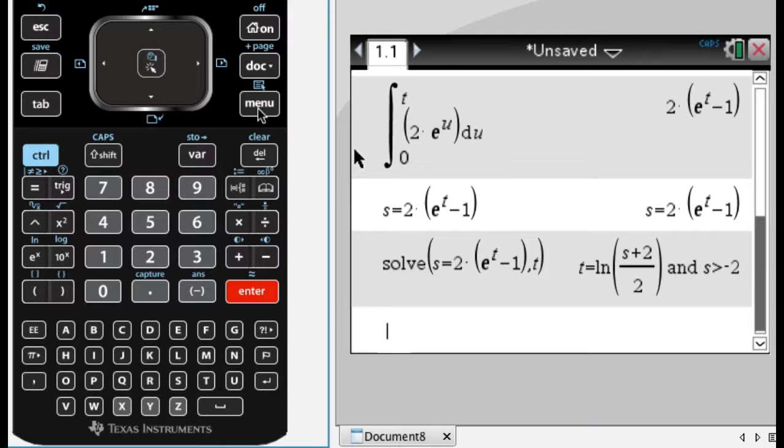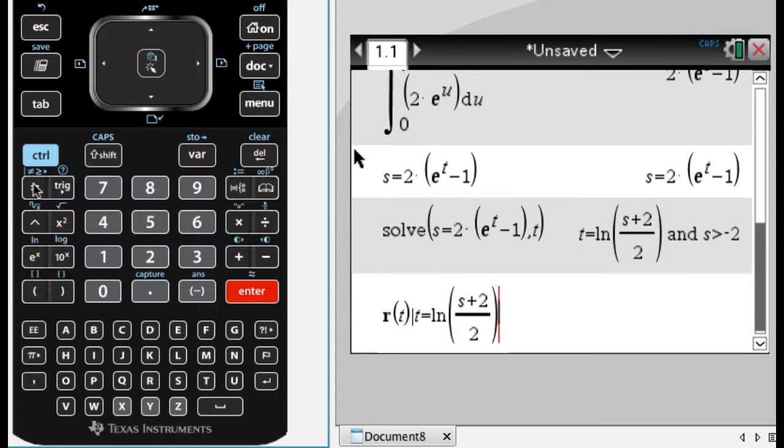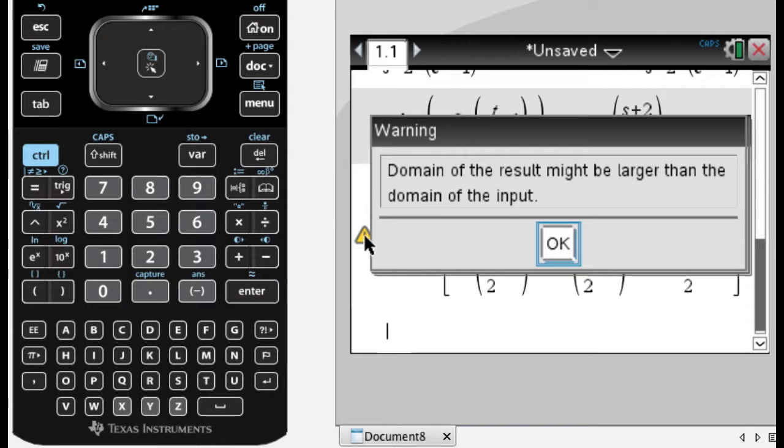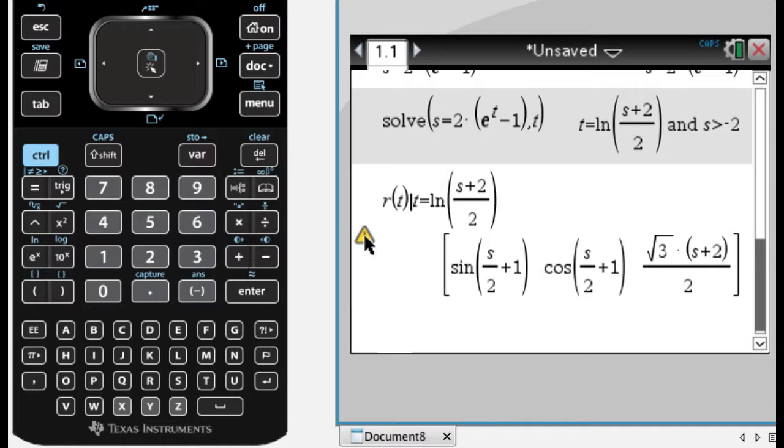So the next thing I want to do is I want to take r of t and I want to rewrite it using this new parameter, so I'm going to do r of t such that. Such that, by the way, is control equals, and then if you go 1 to the left you end up there. And then such that, go up, I'm going to copy and paste this. So I'm holding down shift as I arrow over it. With the new operating system you can't really see what you're highlighting, which I think is a little disadvantage, but it's not that bad. Press enter, it gives me this. I have a warning. I'm going to click on that, it'll tell me the domain of the result might be larger than the domain of the input because it did some simplifications.